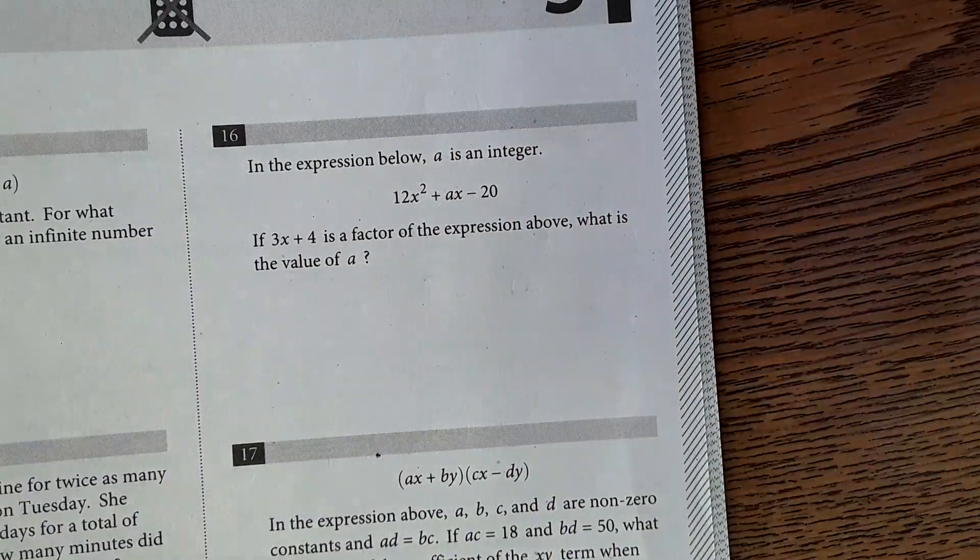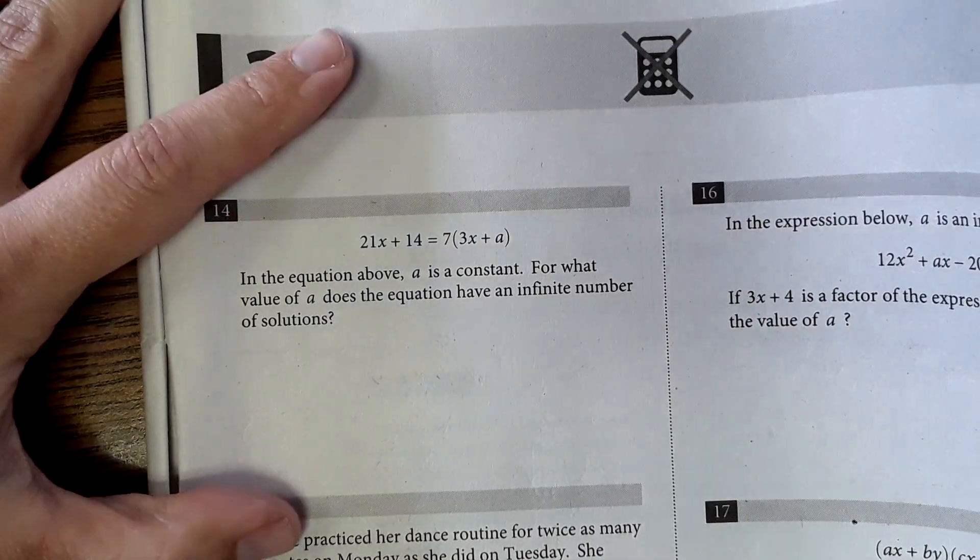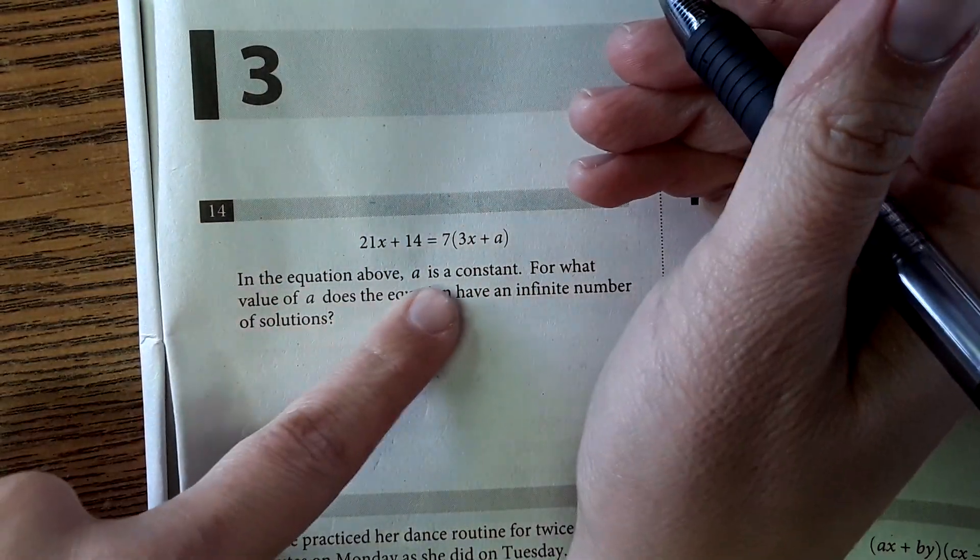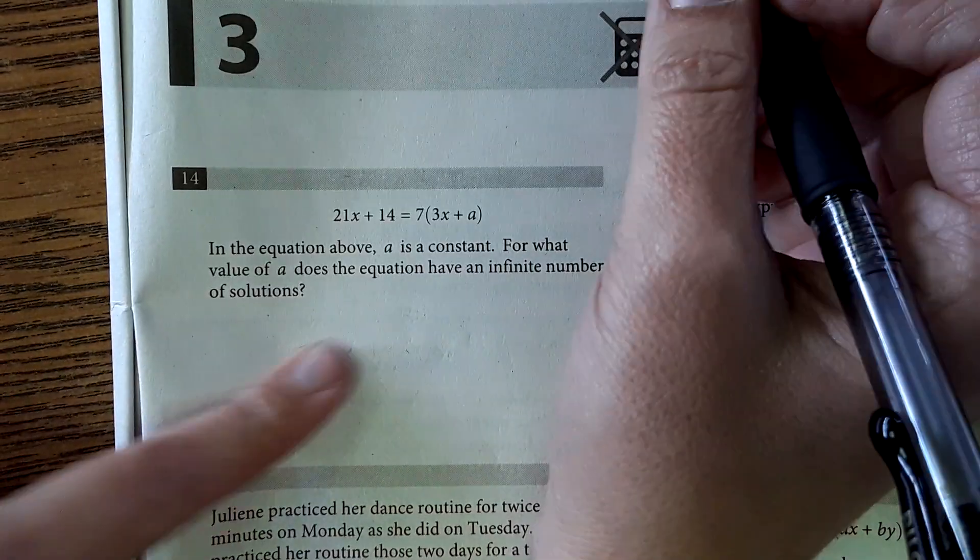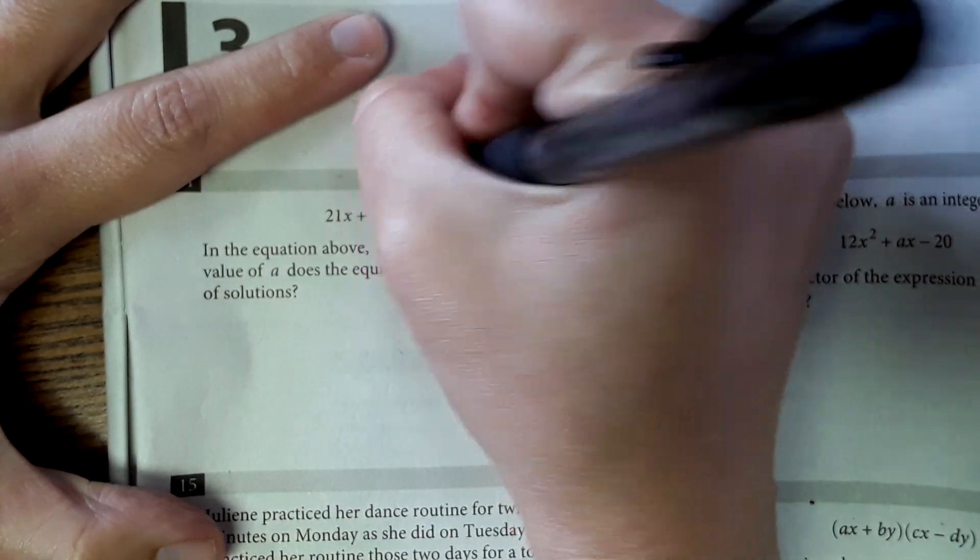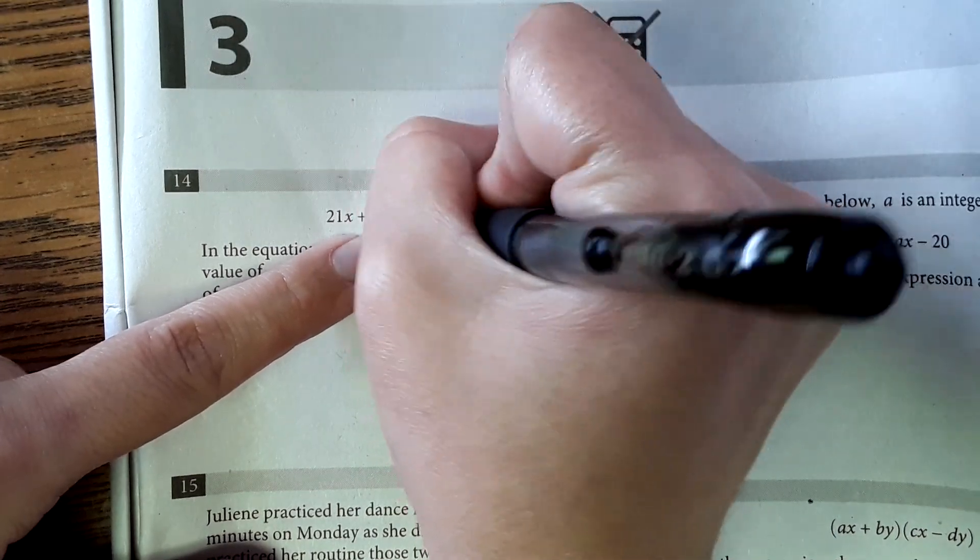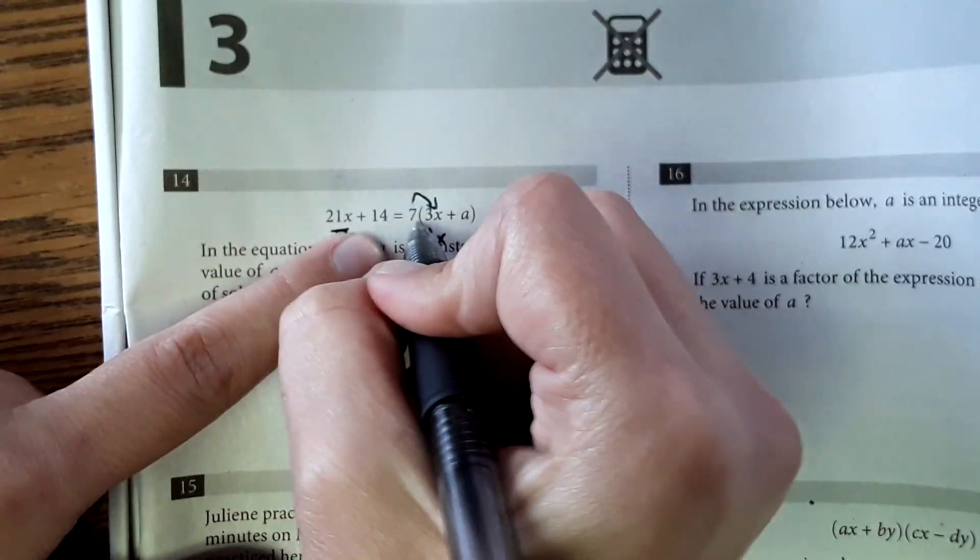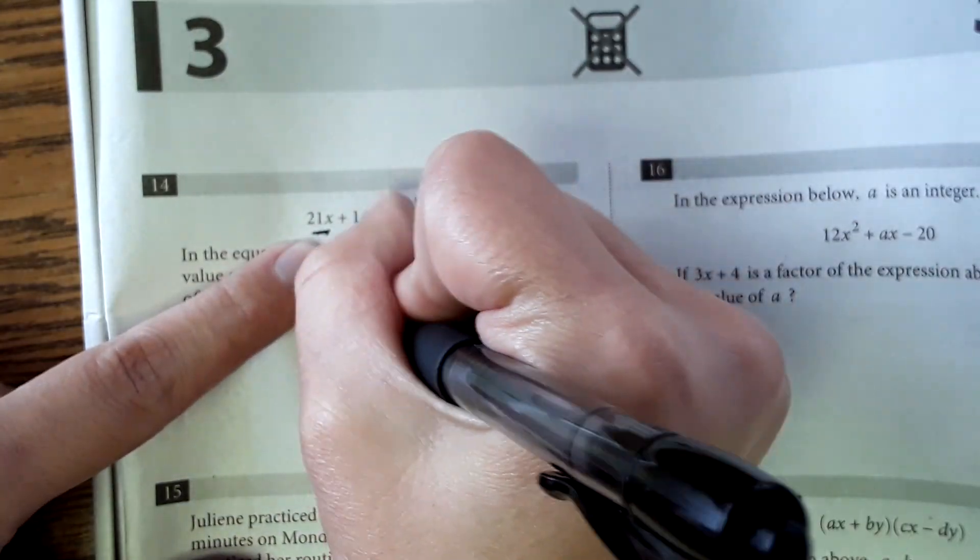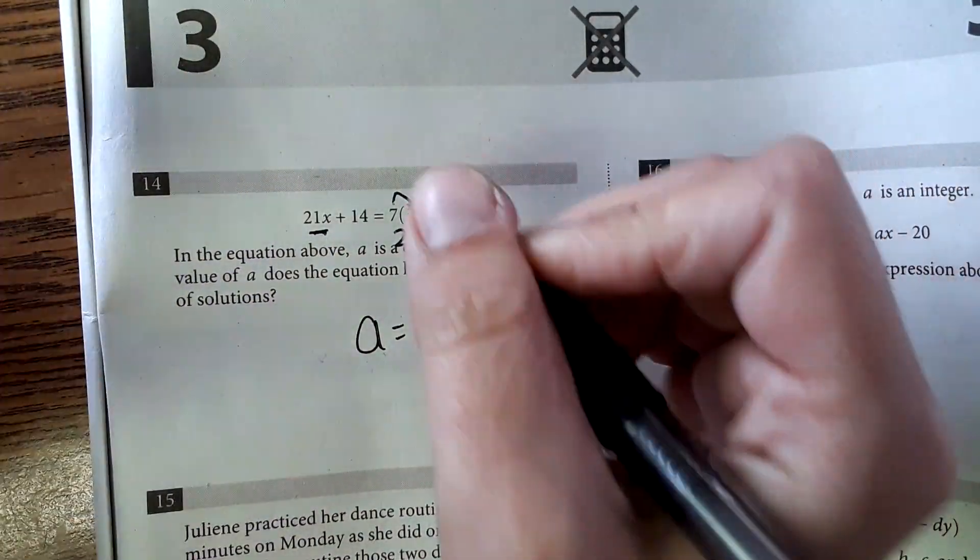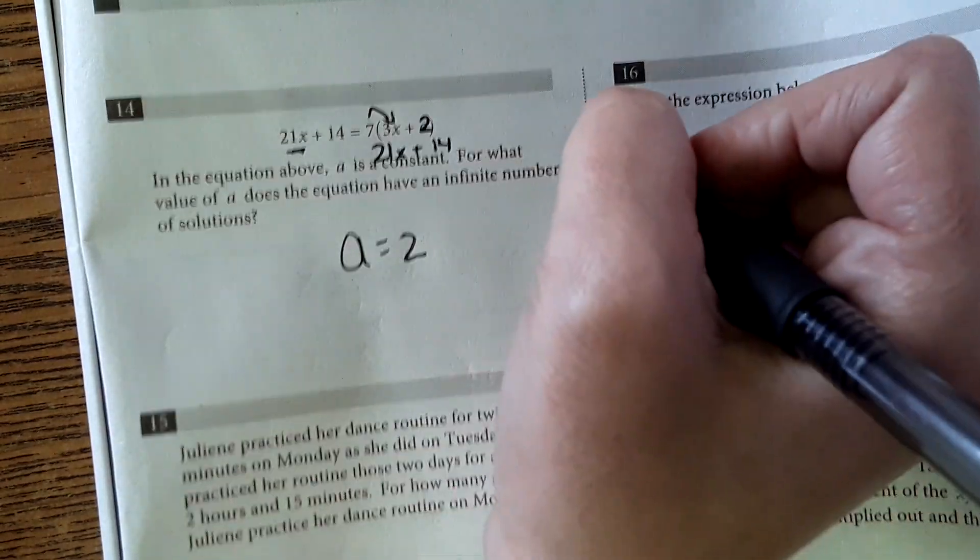Okay, next page. Now we're going to go to the free response questions. So here we have our free response. It says, in the equation above, a is constant. For what value of a does the equation have an infinite number of solutions? Well, if we do 7 times 3x, we need this to equal exactly. So in the simplified, it should be equal. 7 times 3x is 21x. So that matches this. And then we need 7 times this number to equal 14. So 7 times 2 would equal 14. So a must equal 2. You could also solve this out for x. That would work too. You could just solve it out for a. That would work too. But this was the shortest way.